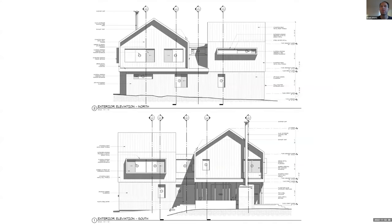Here we have two elevations where shadows really help with three-dimensionality — I'll talk about creating shadows today, though it's not required. The line weight rules are still roughly followed: thickest lines are the ground, followed by the objects closest to us, and the thinnest lines are fine details like siding.